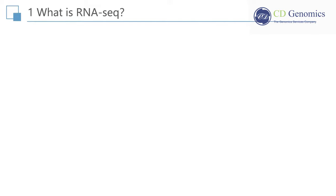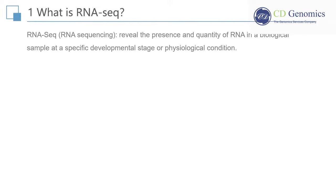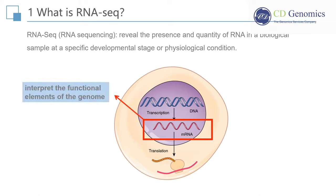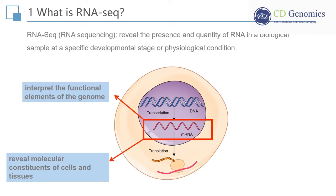RNA-Seq, the abbreviation of RNA sequencing, utilizes Next Generation Sequencing (NGS) to reveal the presence and quantity of RNA in a biological sample at a specific developmental stage or physiological condition. RNA-Seq is a powerful tool to analyze the continuously changing cellular transcriptome, which is essential for interpreting the functional elements of the genome, revealing the molecular constituents of cells and tissues, and understanding development and disease.